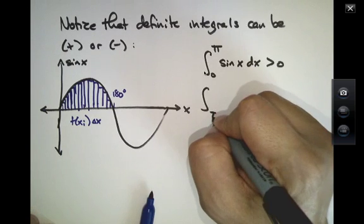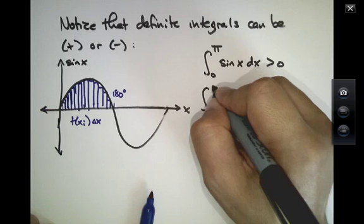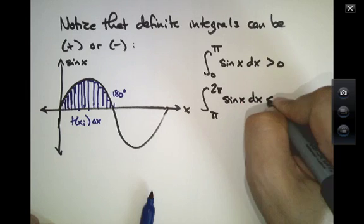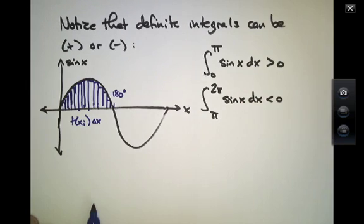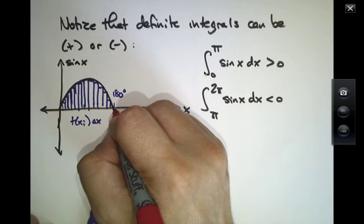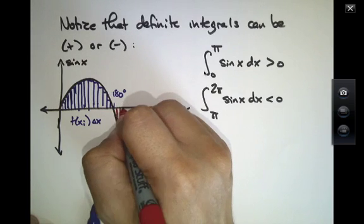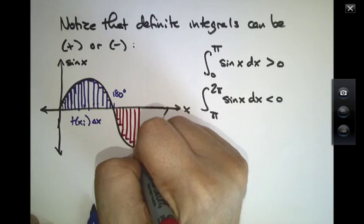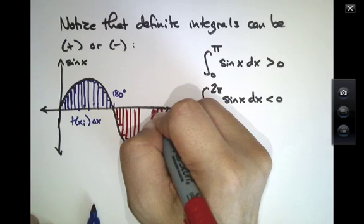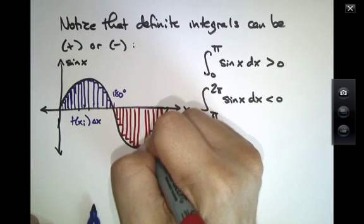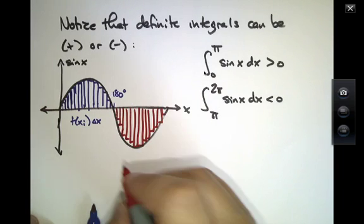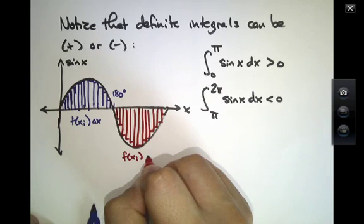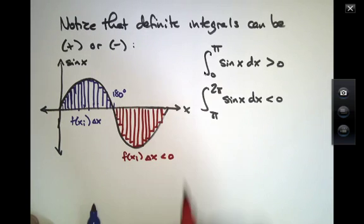But if you were to evaluate the integral from pi to 2 pi of sine of x dx, that number would be less than zero because each of these little rectangles here are now below the x axis, and so each of these little areas of each rectangle is less than zero.